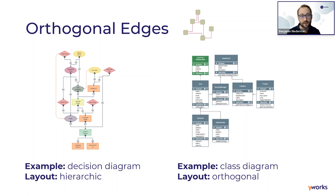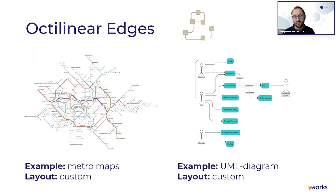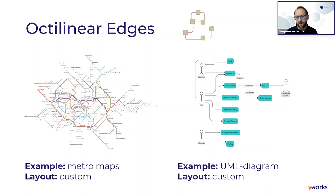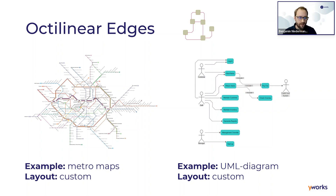A generalization of orthogonal routing is octilinear edges. Here you not only use horizontal and vertical directions but also allow diagonal directions — multiples of 45-degree slopes. This style is typically used in metro maps: if you want to visualize a transportation network schematically, octilinear edges are often used because they are more flexible than orthogonal edges and can also show diagonal paths. This idea of schematization is also found in UML diagrams, where octilinear edges gain flexibility compared to orthogonal ones.